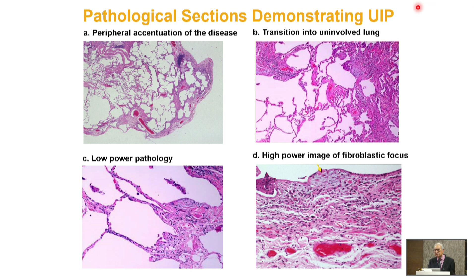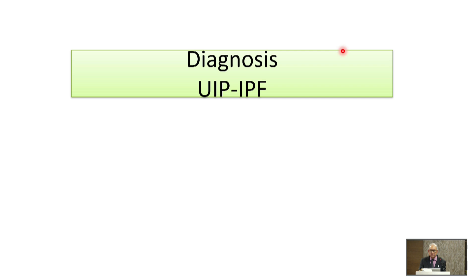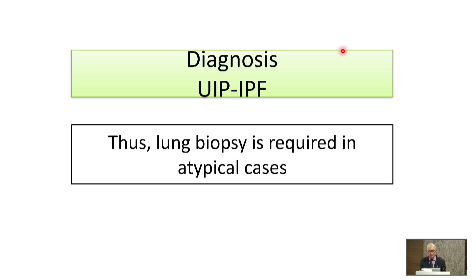When the biopsy was done on this patient, it showed a UIP pattern. At times you need to do a biopsy — whether cryo-biopsy, as TBLB is not the method of choice in suspected fibrotic NSIP or UIP. The diagnosis was UIP/IPF. Lung biopsy is required in very occasional, rare cases where there is diagnostic doubt.